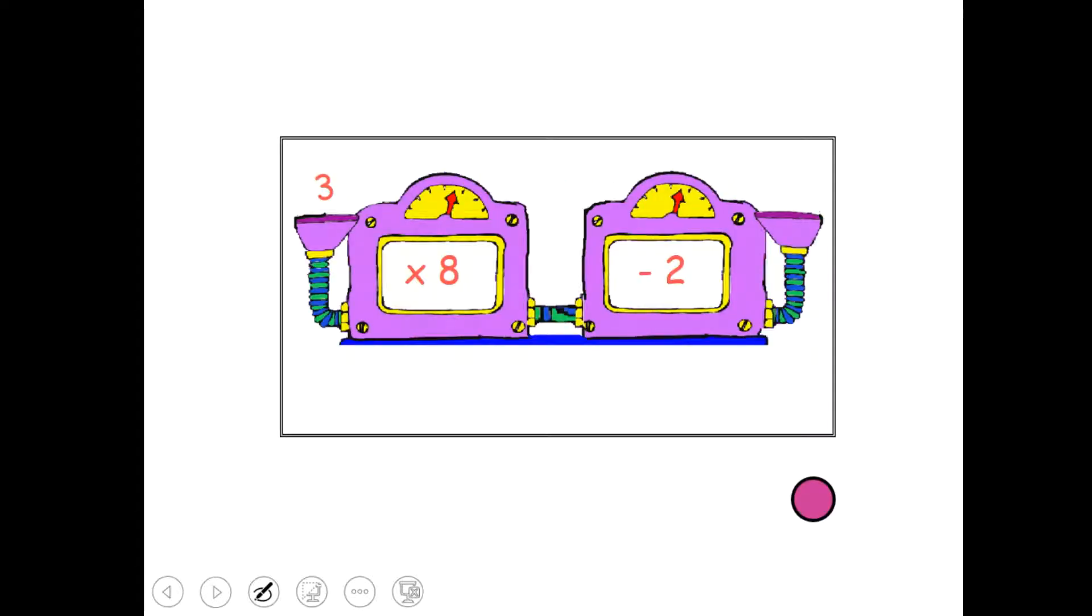So have a look at this one, there are 2 functions happening to this number. Input, if we call this x, output would be coming out here called y. I'd like you to try and tell me, or just think to yourself, what would come out if I put 3 into this. Hopefully you're all sitting there or standing or whatever you're doing saying the answer is 22. Yes, it's 22.